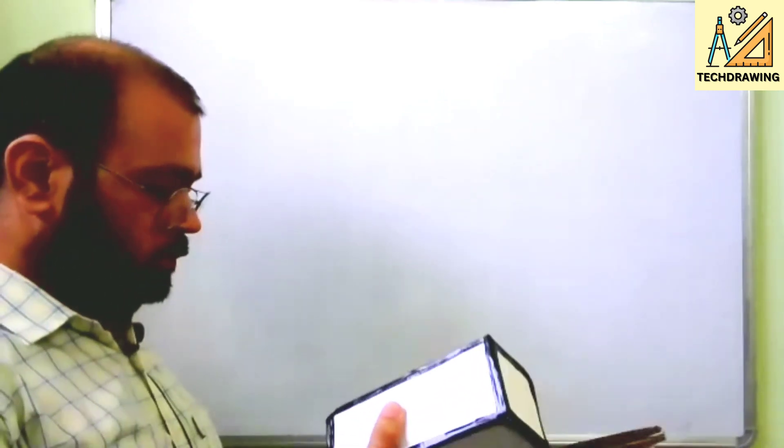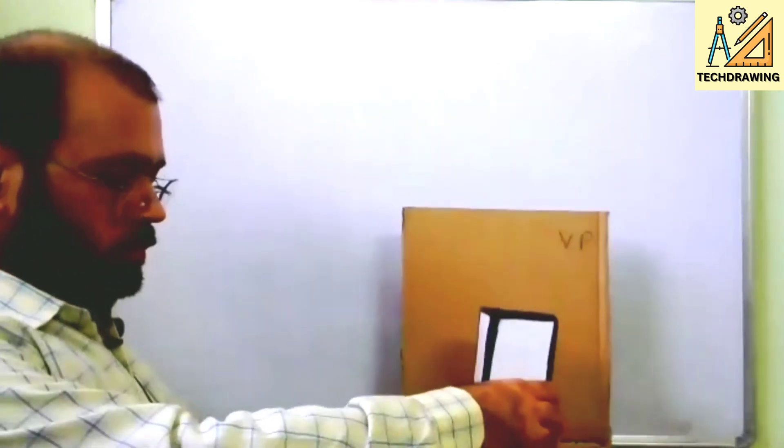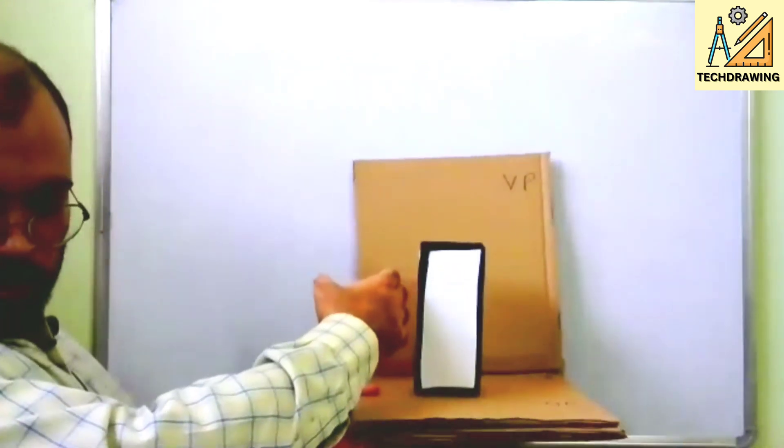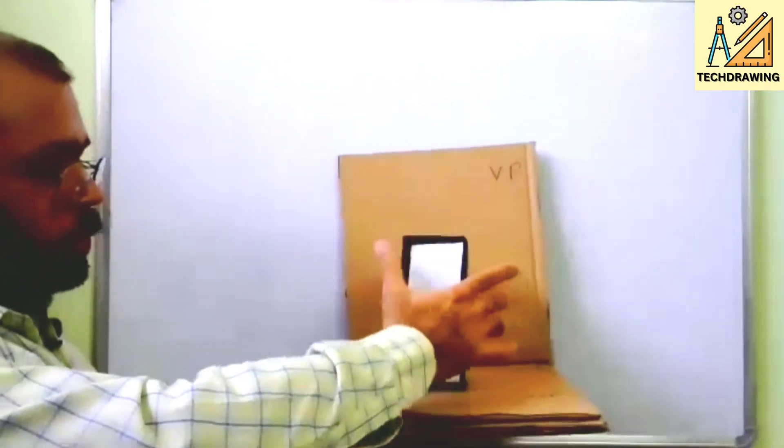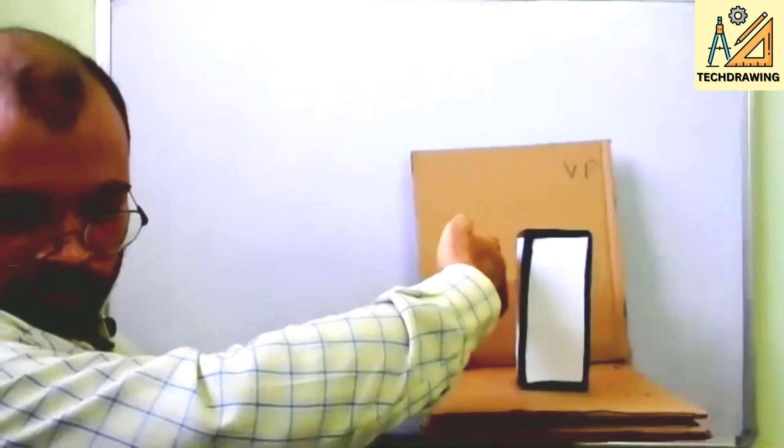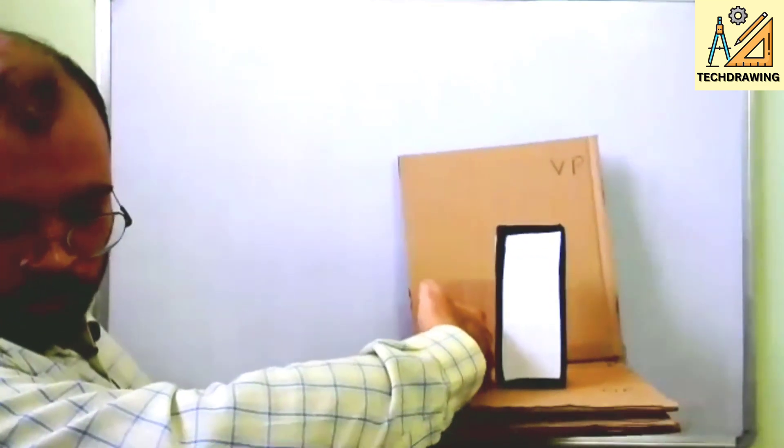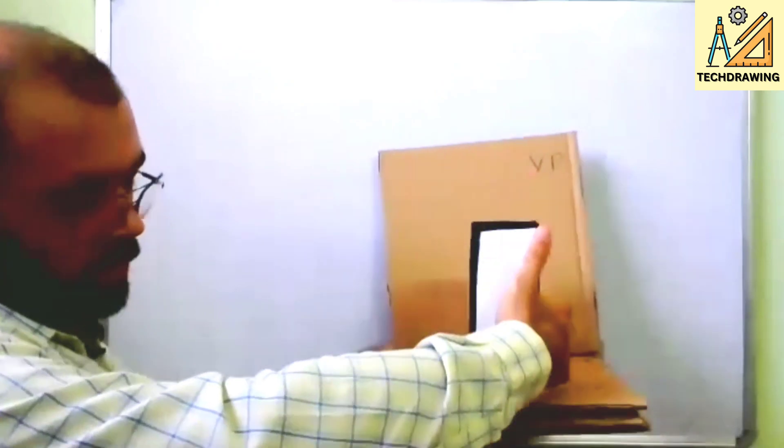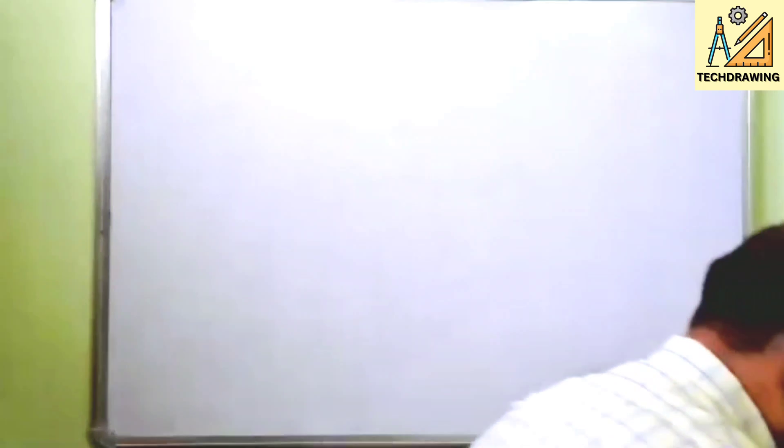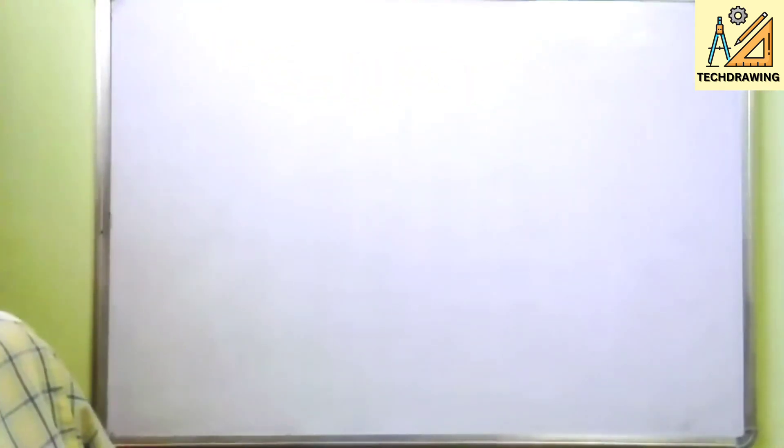It is resting on HP such that one of its vertical faces is perpendicular to VP, so it will be like this. Two of these are the vertical faces, this one and this. So this is one of the rectangular faces - sorry, vertical faces. This is the other vertical face which is perpendicular to VP. First of all we will draw the projection, then only we will be able to do the development.